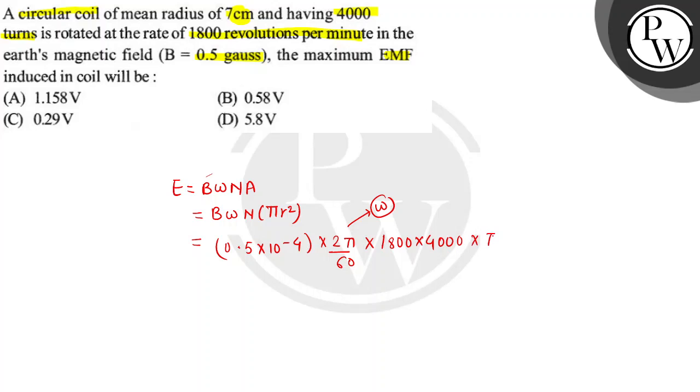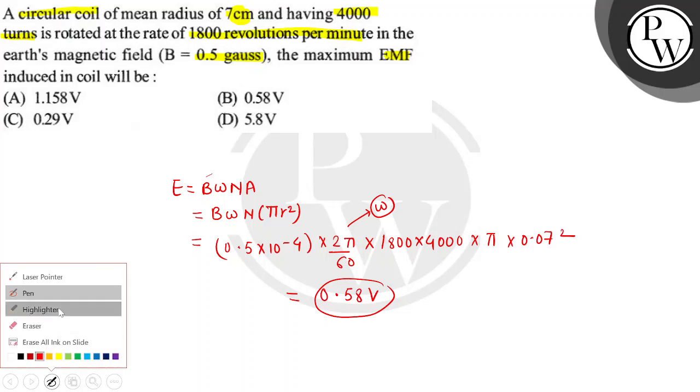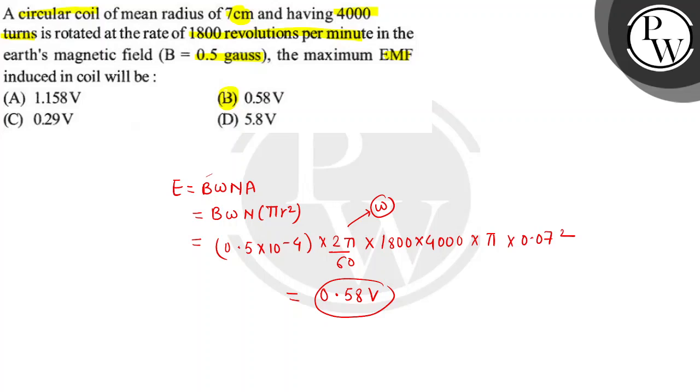Into pi into 0.07 square. So the correct option is 0.58 volt, that is the final answer which is B. I hope you all understood this well, all the best.